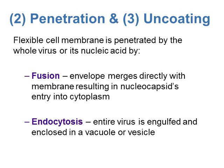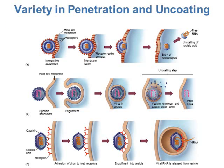For penetration and uncoating in animal cells, the flexible host cell membrane is penetrated either by the whole virus entering or just the nucleic acid. One method is fusion, where the envelope merges directly with the host cell membrane, resulting in the nucleocapsid entering the cytoplasm. Another method is endocytosis, where the entire virus — including the envelope — is engulfed and enclosed in a vacuole or vesicle.